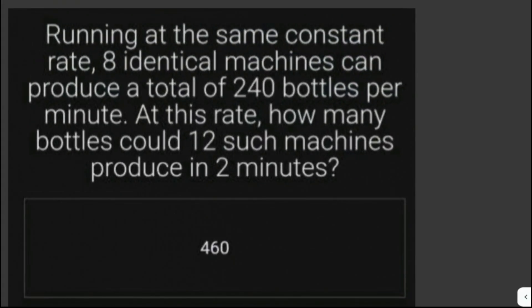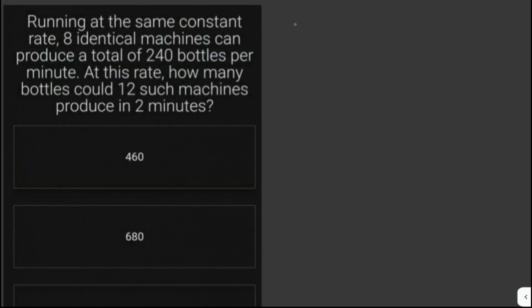Running at the same constant rate, 8 identical machines can produce a total of 240 bottles per minute. At this rate, how many bottles could 12 such machines produce in 2 minutes? So we are asked here for the number of bottles that would be produced by 12 machines in 2 minutes.